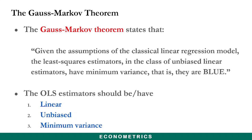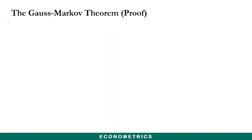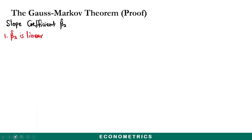Practically, the OLS estimators should be: one, linear; two, unbiased; and three, should have minimum variance. We are going to prove these properties in respect of the Gauss-Markov theorem for the OLS estimators. We are going to start with the slope coefficient. What we are going to prove first is that β₂ is linear, and that happens to be the first property.